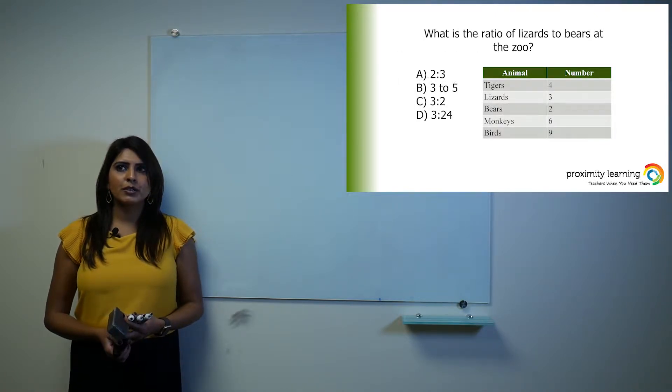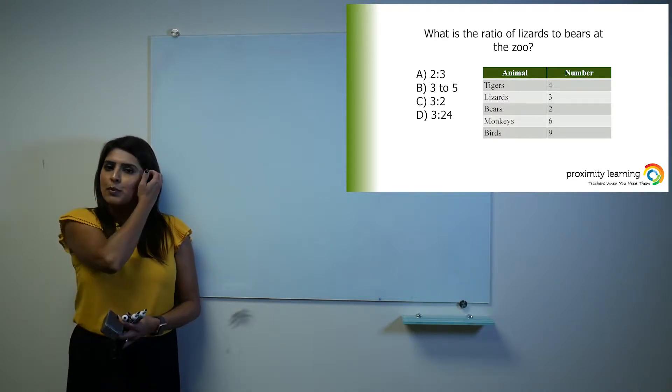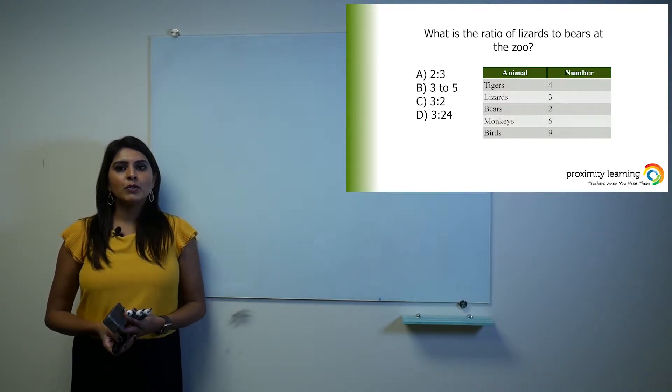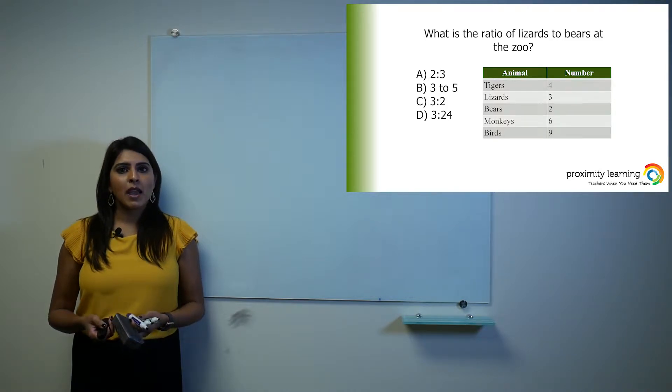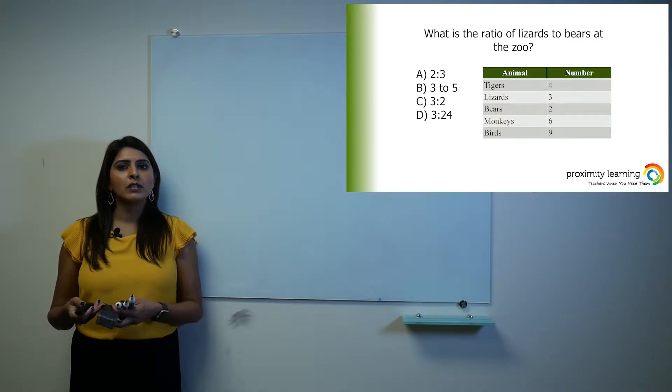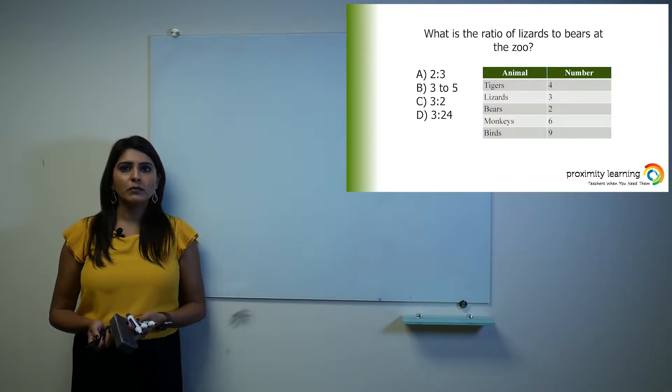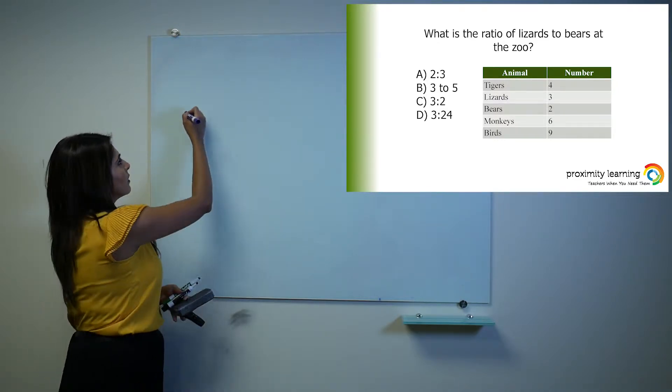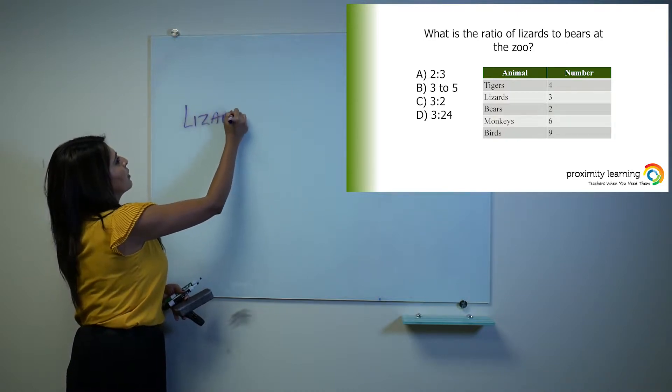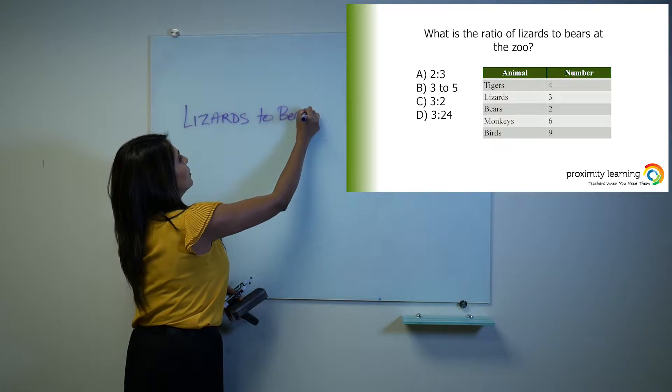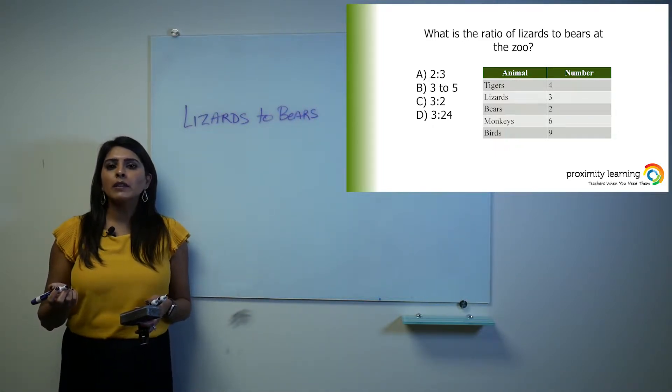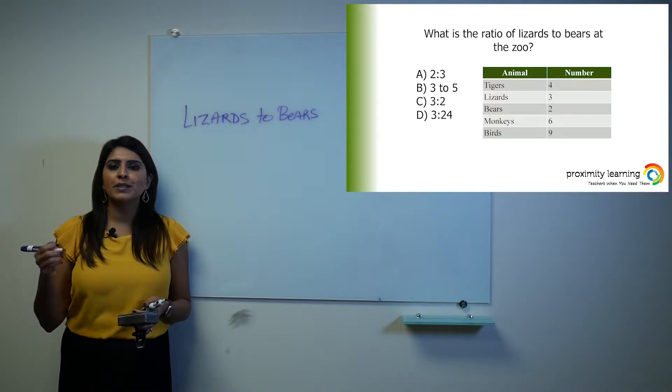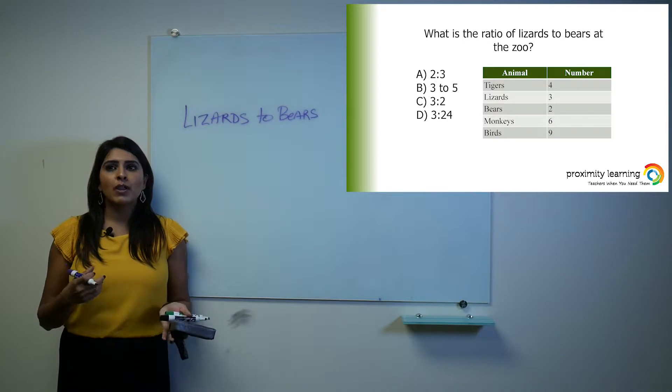What is the ratio of lizards to bears at the zoo? This is our first practice problem. I do want to let you know that anytime we do problems in this lesson, you can pause, solve the problem on your own, and then hit play again. That's where I will go over the question, explain everything, and give you the final answer. The ratio of lizards to bears - I like to write those terms out. You can go ahead and highlight them or use a pen or pencil and make circles on those terms.